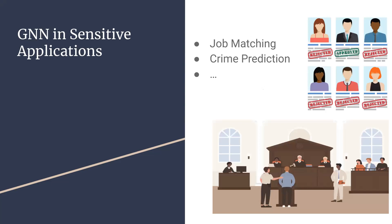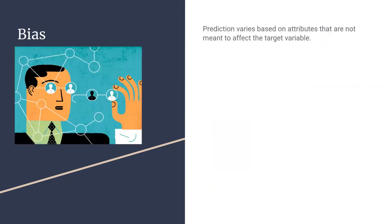GNNs can be used in many applications, and in particular many sensitive applications. For crime prediction, it's quite interesting that a person's relations with other people might be a predictor of whether he is guilty or not. Similarly for job matching, the existence of someone in a given network might indicate a certain set of skills. However, we face the problem of bias that any machine learning model faces.